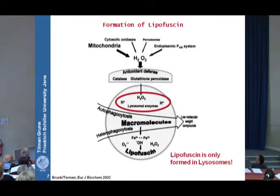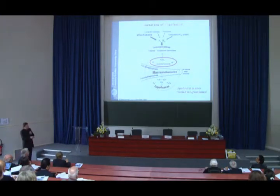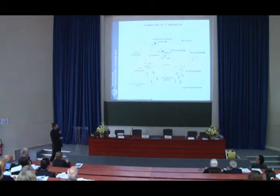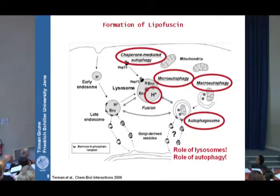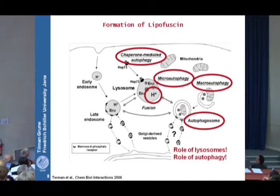From one of their papers from 2002 and a couple of years later, they pointed out that lipofuscin is only formed in lysosomes. They further published that by different autophagic processes, an autophagosome is formed which fuses with a primary lysosome — again with an acidic pH — and lipofuscin is finally formed within the lysosomes.